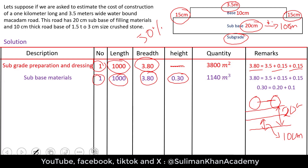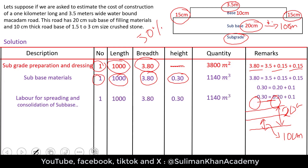Next is labor for spreading and consolidation of the subbase. When materials are brought to site by dumpers and loaders and unloaded roadside, labor is required to spread those materials according to specifications and given dimensions. Since the same material is simply being spread, the quantity for labor spreading is the same as the subbase material quantity.